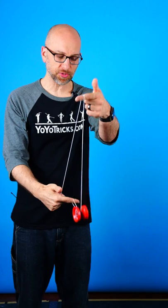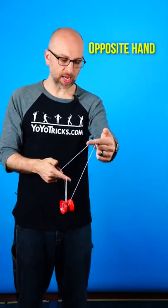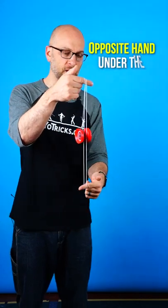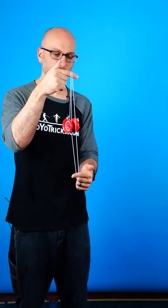The first thing you want to do is throw a split bottom mount, which we have taught in previous videos. From there you take your opposite hand and go under the yoyo, over the top of your yoyo hand, and then back under the yoyo again. This locks the yoyo in place.